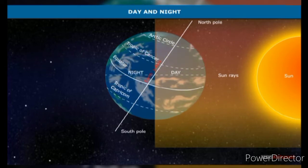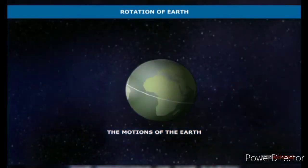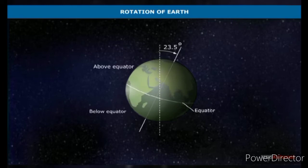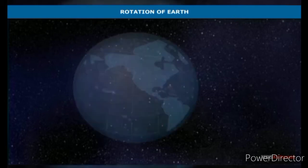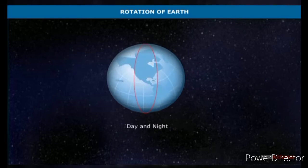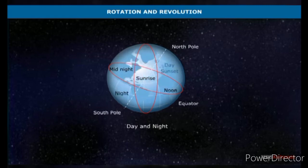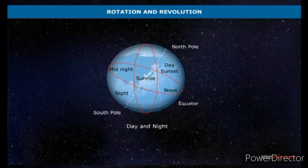When it is completely dark, it is known as night. At midnight, the circle of illumination has moved to exactly the opposite side. The spinning of the earth around its imaginary axis is known as rotation. The axis is inclined at an angle of 23 and a half degrees with the perpendicular to the plane of the earth's orbit. The earth performs this motion at a fixed speed with precision, day after day, and the direction of movement is from west to east.